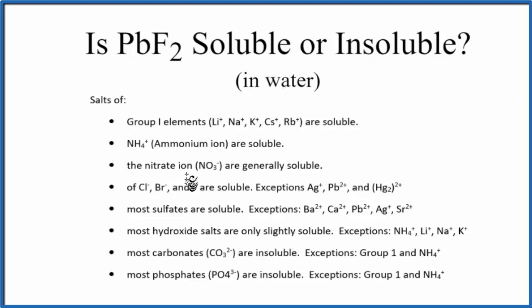We have these solubility rules here. As we look down the rules, we see chlorine, bromine, and iodine. In general, compounds with these elements are soluble. I would probably include fluorine in this list. It's in the same group on the periodic table. However, there are exceptions, and one of the exceptions is this lead 2 ion.